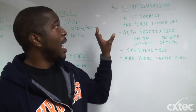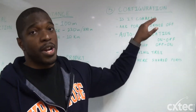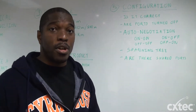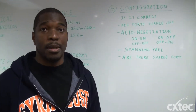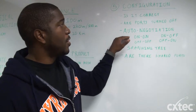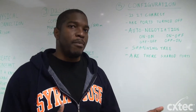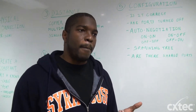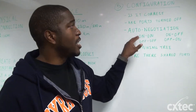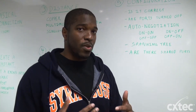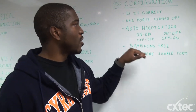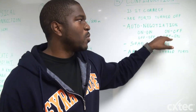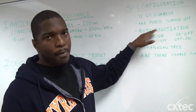Number five, and the broadest subject, is configuration. Make sure your configuration is correct. Are the ports turned off? You can disable ports and may not know they're disabled, perhaps from a previous configuration. Auto-negotiation is a big one — sometimes going from a different manufacturer, like Cisco to HP or even Avaya to Avaya, auto-negotiation could be on one side and off on the other so they're not communicating correctly. Try four combinations: on/on, off/off, on/off, and off/on.